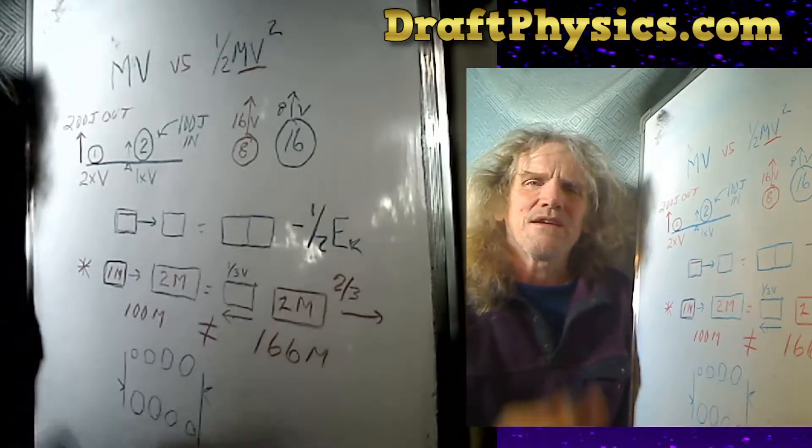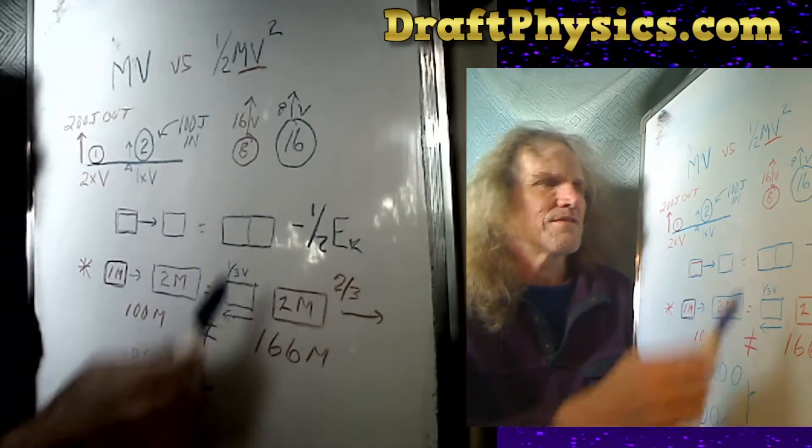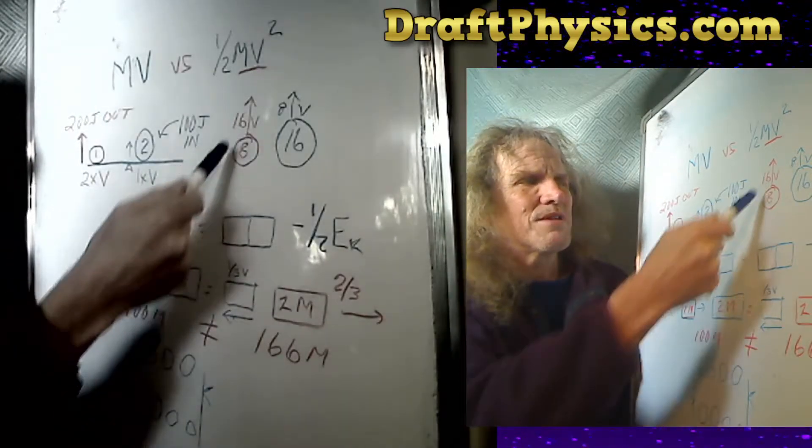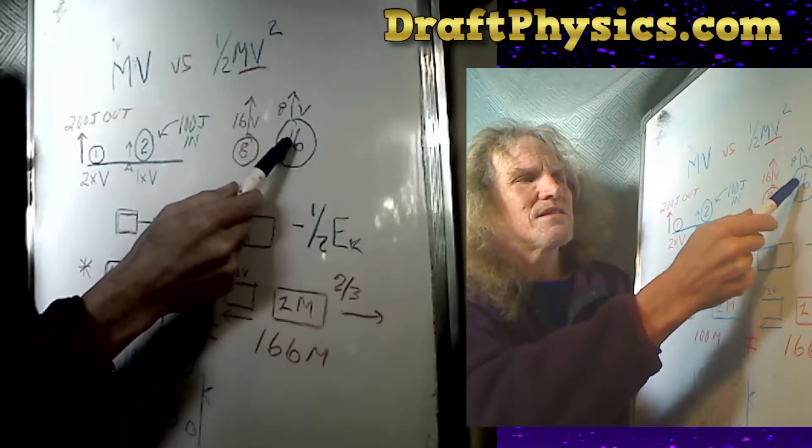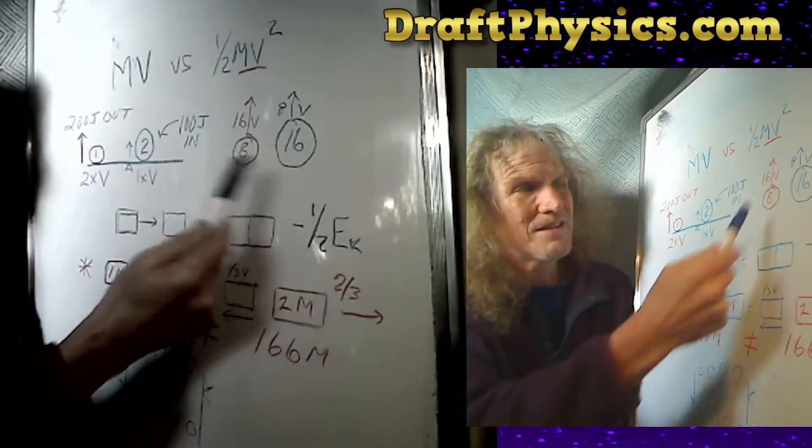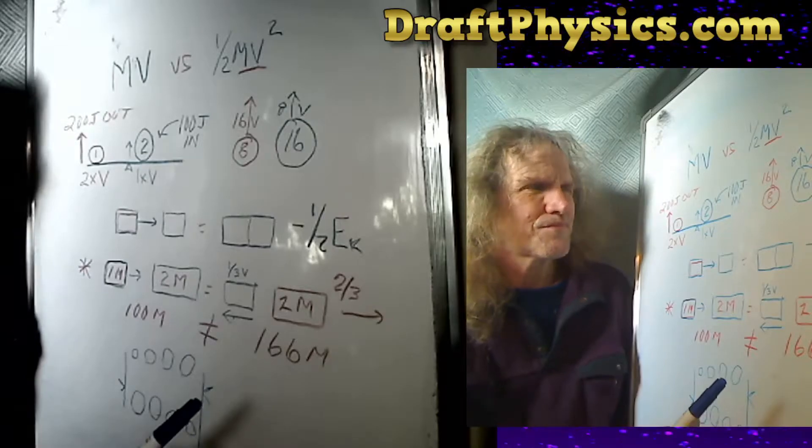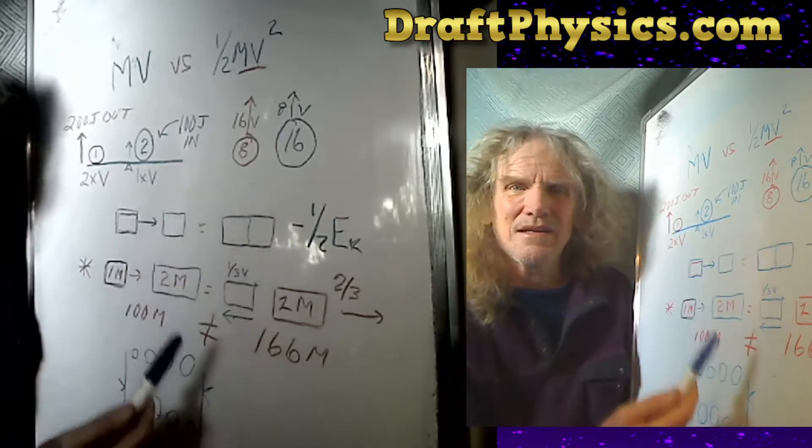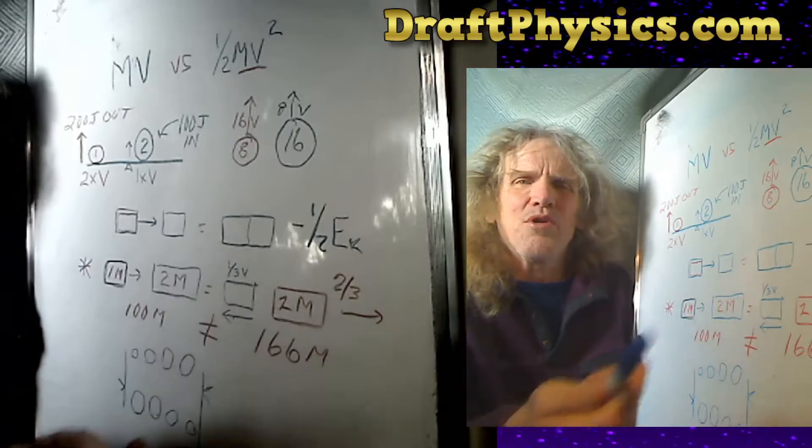They keep saying it takes four times more gas to go twice as fast. No evidence. The eight-pound bowling ball going 16 miles an hour or the 16-pound ball going eight miles an hour. Momentum says they have the same energy. They say, physics says, science says, somehow the eight-pound ball has more energy.